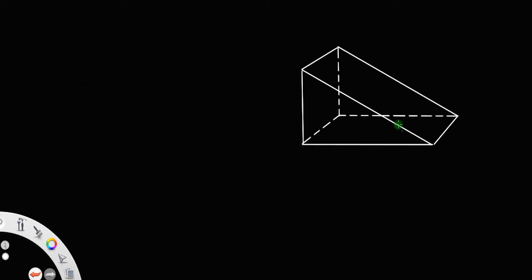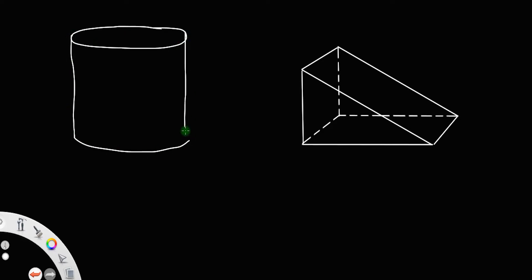So, how will you prove Pascal's Law? Suppose there is a solid in the shape of a triangular prism. If you have a beaker filled with some kind of liquid, we have a solid in the shape of a triangular prism dipped in the liquid.